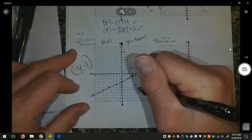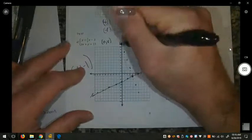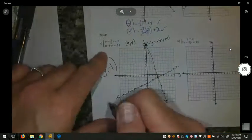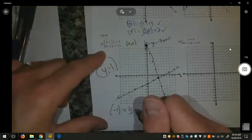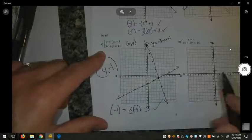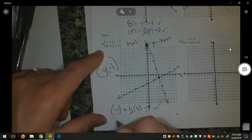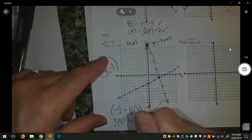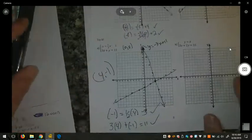I verify this by plugging in negative 1 equals half of 4, which is 2 minus 3. 2 minus 3 is negative 1, so that's correct. 3 times 4 is 12, plus negative 1 is 11, so that's correct as well.